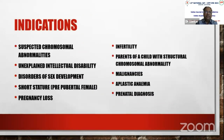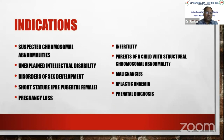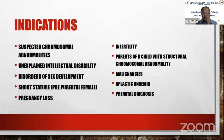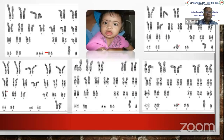Indications for karyotype include: suspected chromosomal abnormalities like Down syndrome; unexplained intellectual disability; disorders of sex development (DSD) — to determine 46,XX or 46,XY and guide classification and sex of rearing; short stature in a pre-pubertal female to rule out Turner syndrome; recurrent pregnancy loss (parents screened for balanced translocation); infertility; parents of a child with structural chromosomal abnormality; some malignancies, aplastic anemia, especially constitutional aplastic syndrome; and prenatal diagnosis.